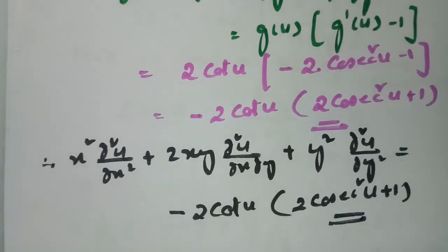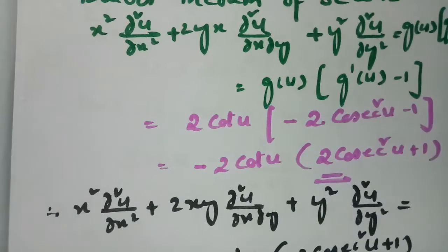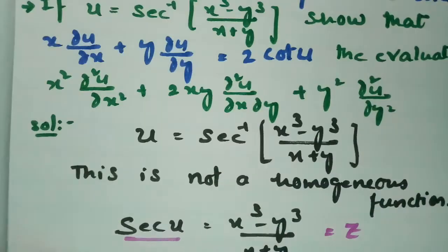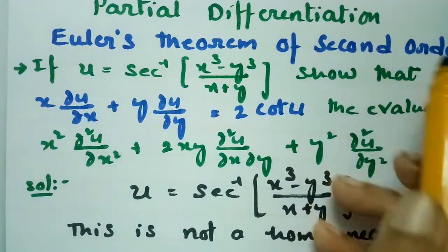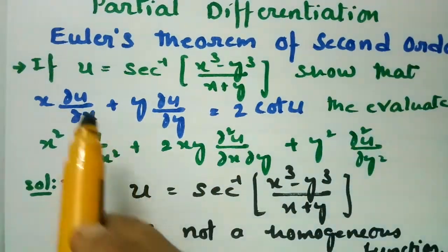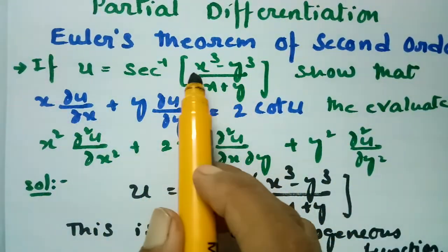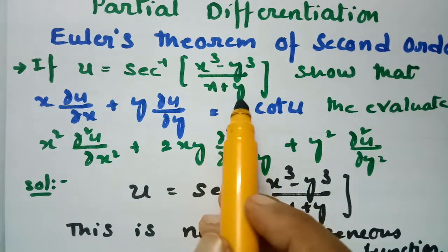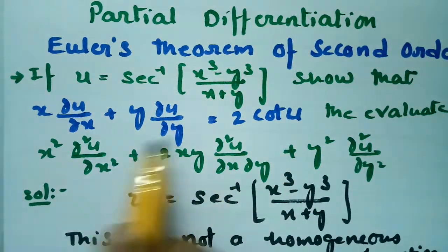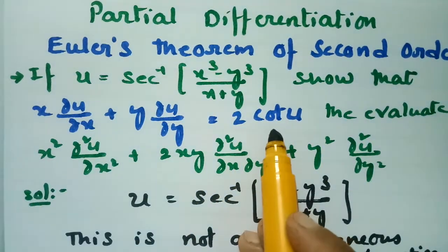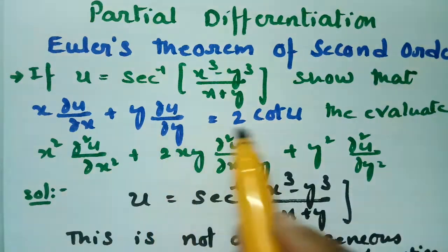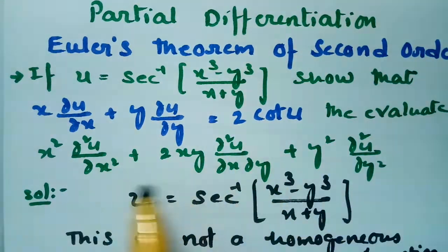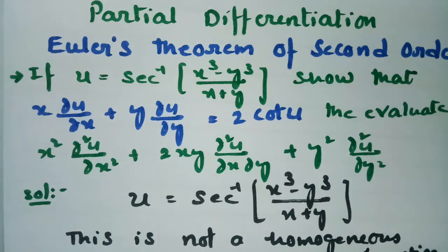Therefore, x² ∂²u/∂x² plus 2xy ∂²u/∂x∂y plus y² ∂²u/∂y² equals minus 2 cot u into (2 cosecant squared u plus 1). This is the value, and this is how we verify Euler's theorem of second order.